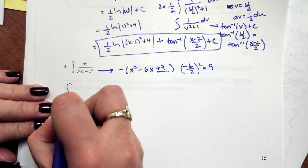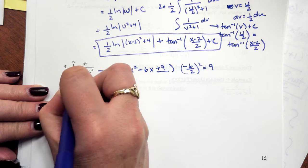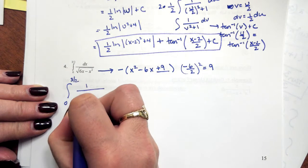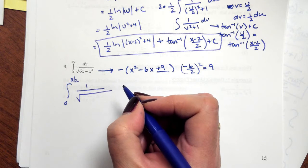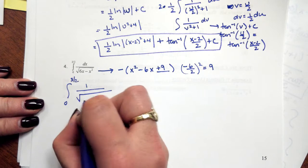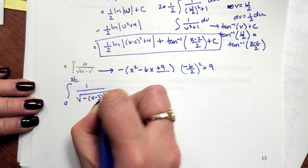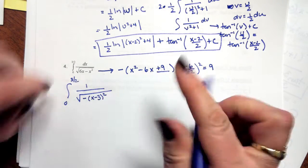So when I rewrite this interval of 0 to 3 halves, 1 over the square root of the negative x minus 3 squared, but remember this is a minus 9, so